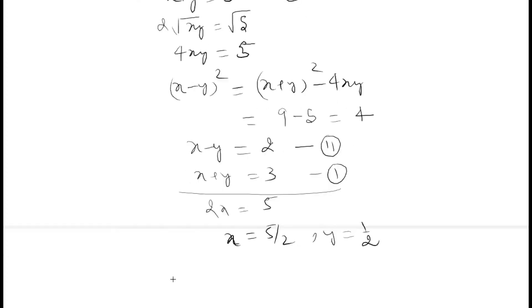Now you've got your square root. So this is square root of x plus square root of y, right? So this is square root of 5 by 2 plus square root of 1 by 2. So this is how you will be finding this square root.